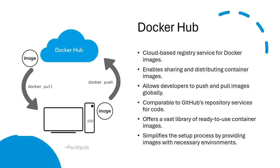Docker Hub is a registry service for Docker images. It allows users to share and distribute Docker images. Developers can push their images to Docker Hub so others can pull these images to create containers based on them. This is analogous to GitHub, a central repository where developers store, share, and manage their code. Just like GitHub is for the code world — where other developers can see your work, fork it, and contribute back — Docker Hub does the same for the containers world. You can not only publish Docker images but find a vast library of images for various applications and services, ready to be pulled down and used instantly, much like cloning a repository from GitHub.